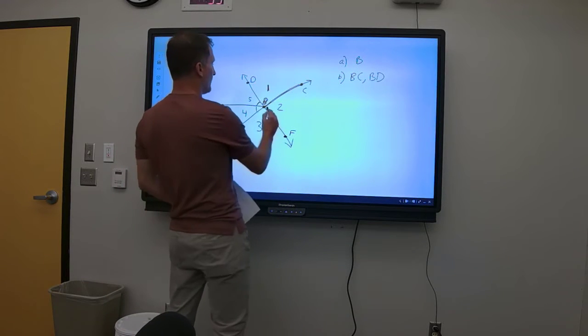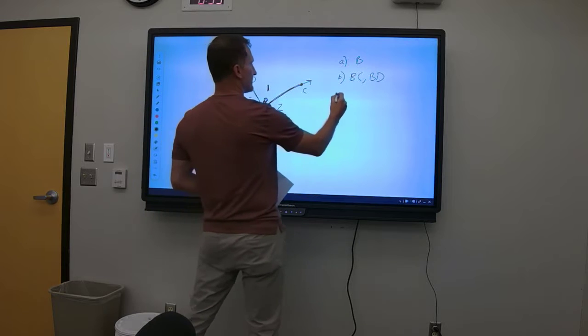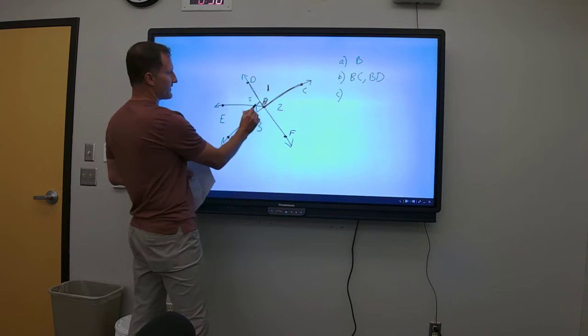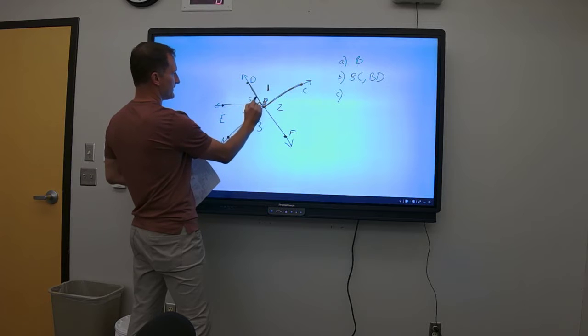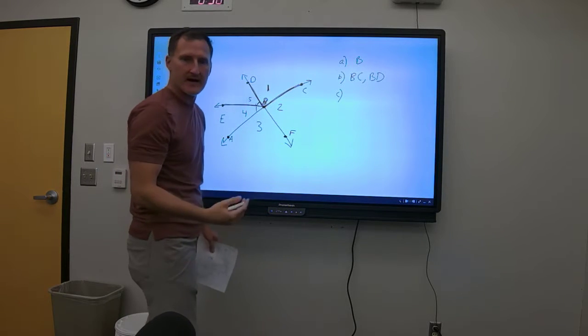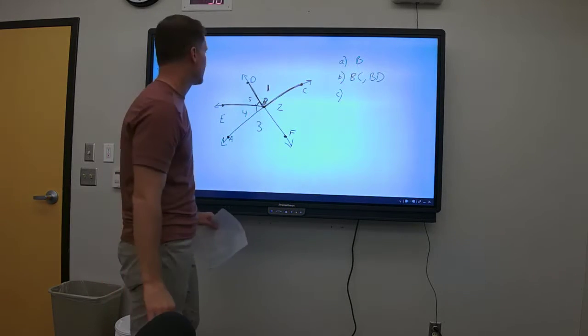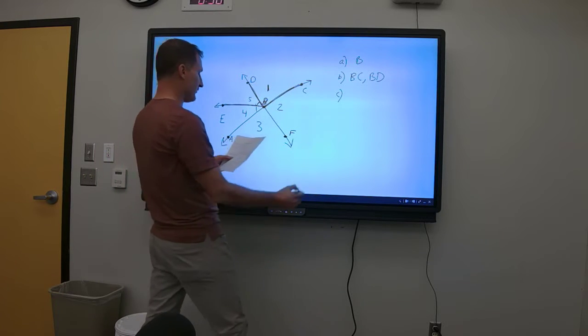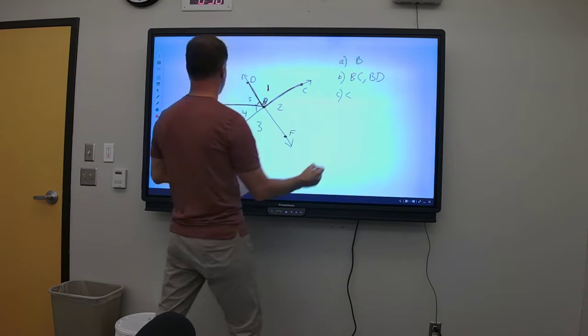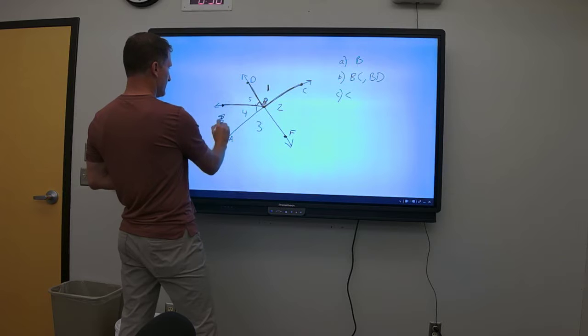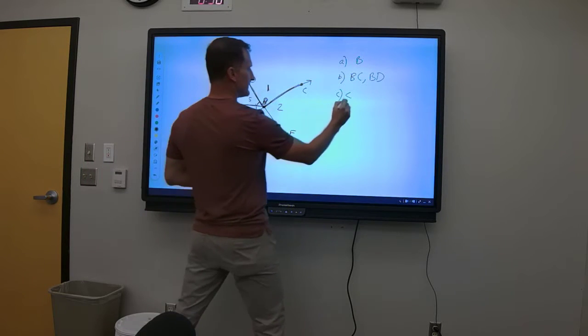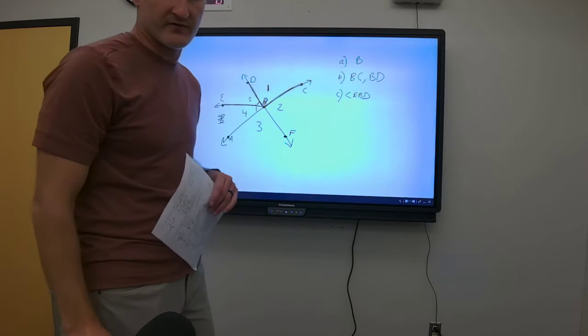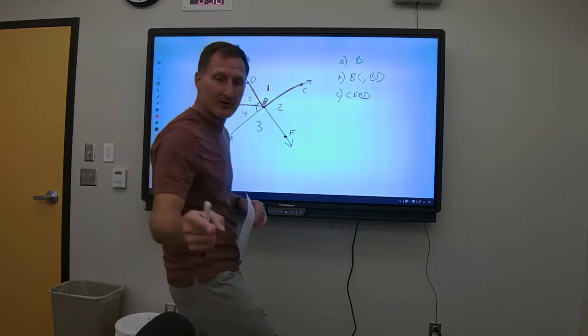Okay, so BC and BD. Now C: Write another name for angle 5. What is another name for this angle right here, angle 5? I'm gonna keep touching this so it doesn't freeze. What are the points that make up that angle? So what makes up 5? It is angle EBD. EBD. And this is all stuff you've been doing so this should be kind of a review. This should be making sense to you by now. Like I say all the time, if it doesn't make sense come see me because you need to know this by now.